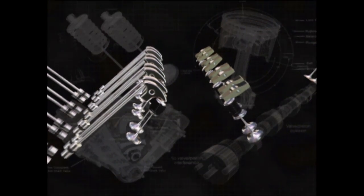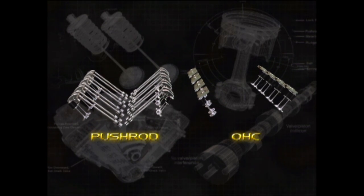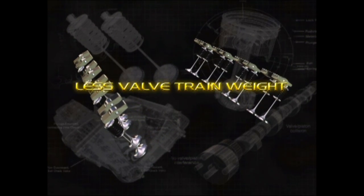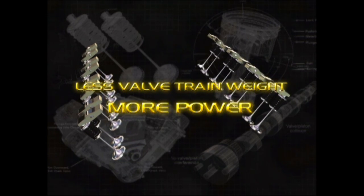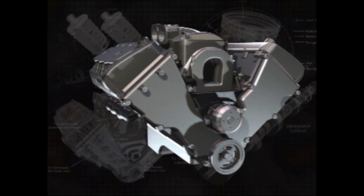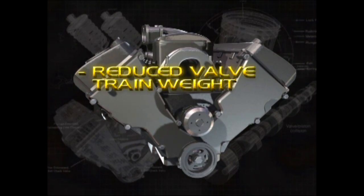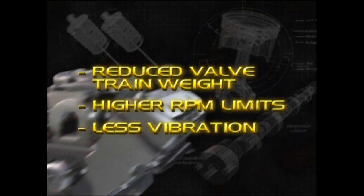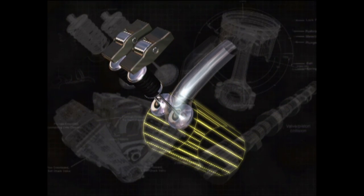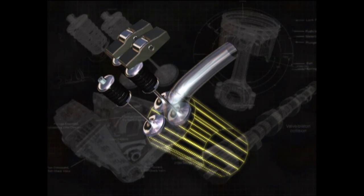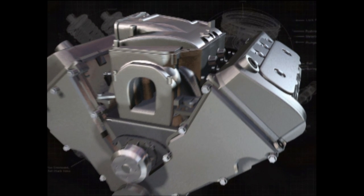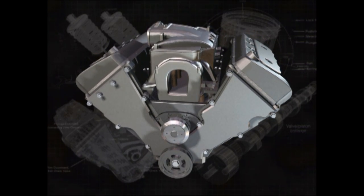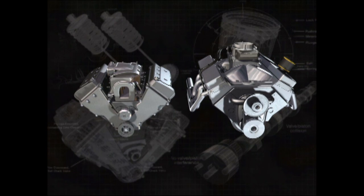The big difference between push rod engines and overhead cam is the number of valve train parts. The fewer number of parts in an OHC application translates to less valve train weight, and saving weight translates to making more power. Reduced valve train weight means higher RPM limits and less vibration for smoother operation. Without push rod tubes in the way, intake ports can be straighter for higher airflow, and configurations with three or more valves per cylinder are possible. All this improved efficiency also means more horsepower per cubic inch of displacement, resulting in smaller and lighter OHC engines with comparable power.